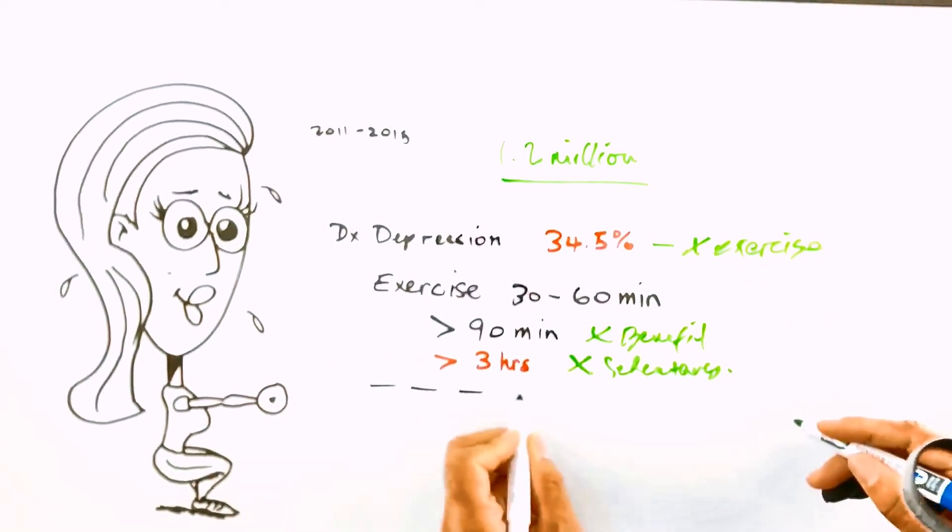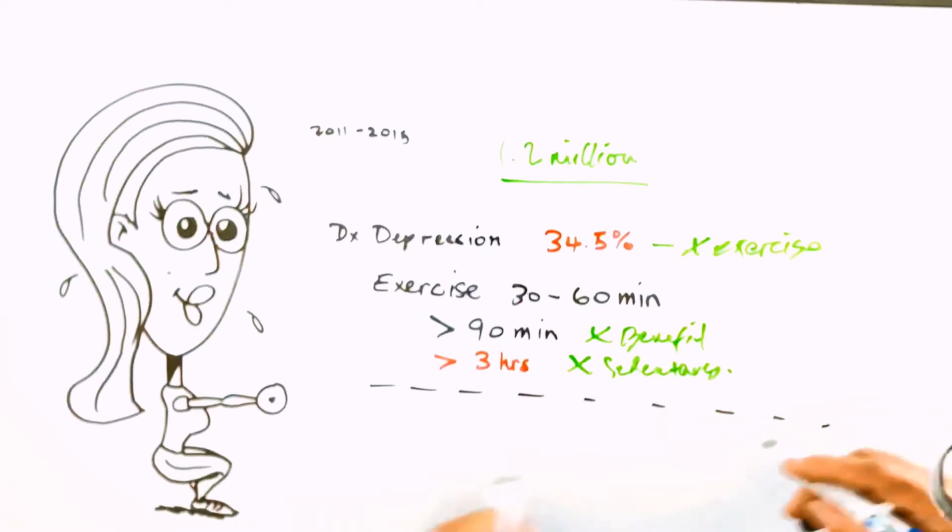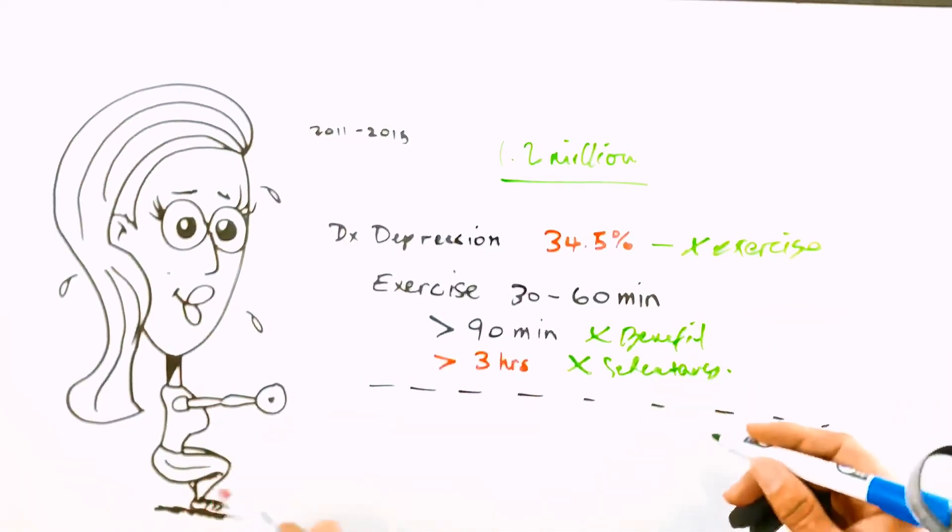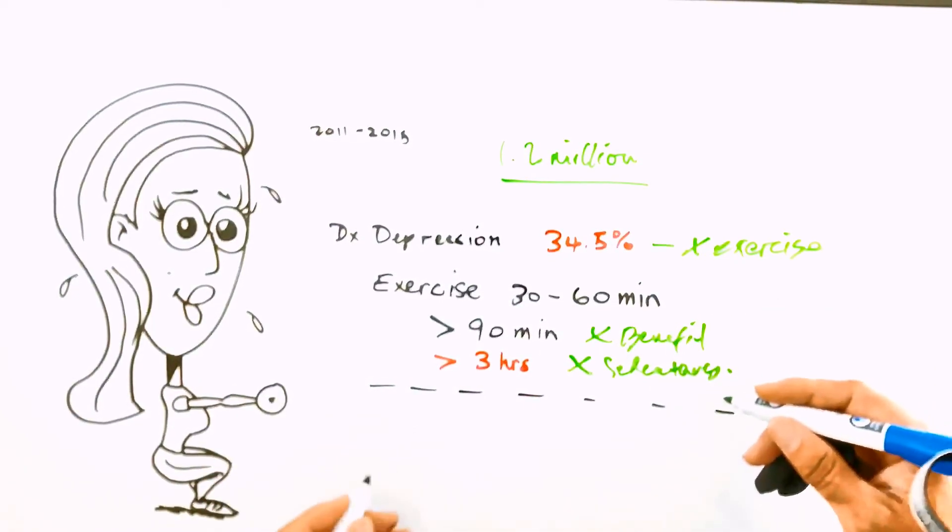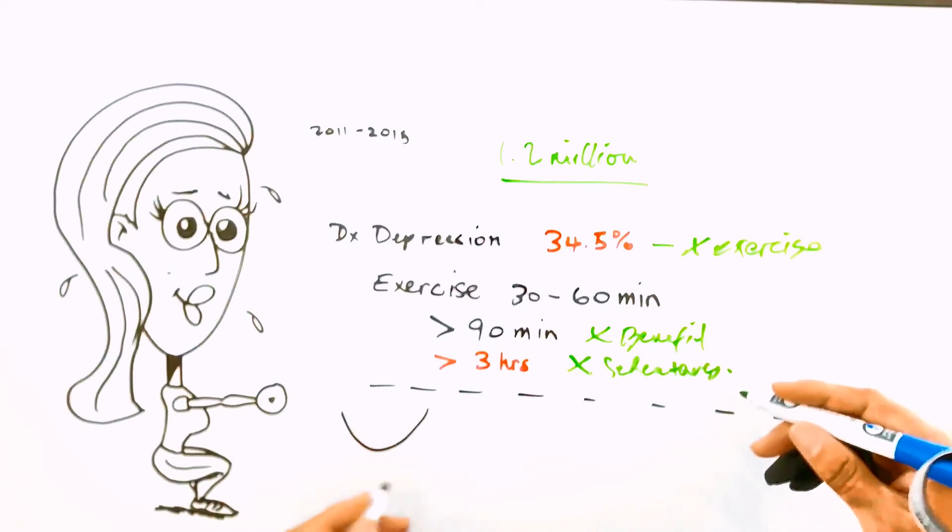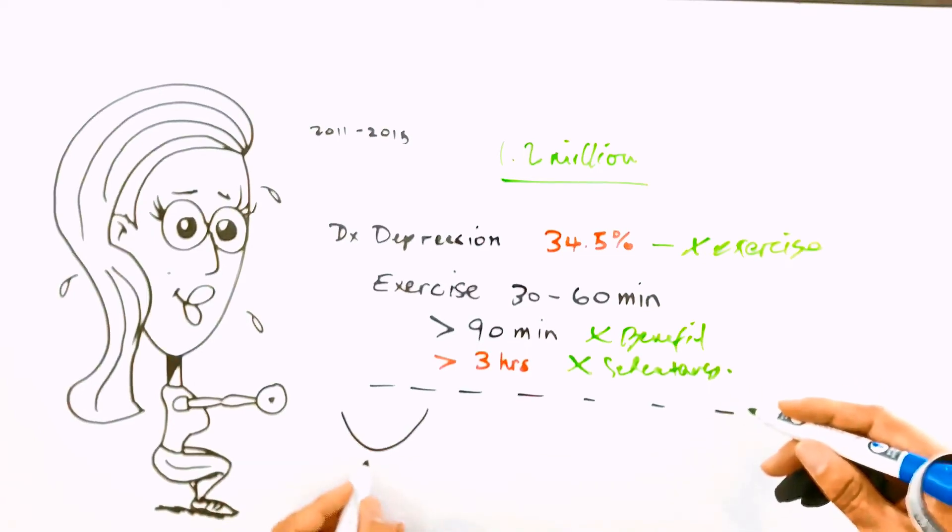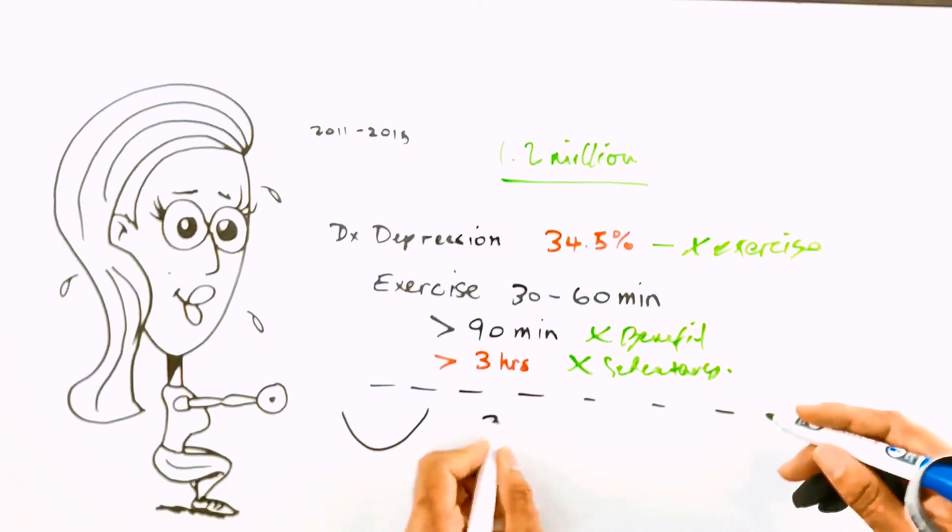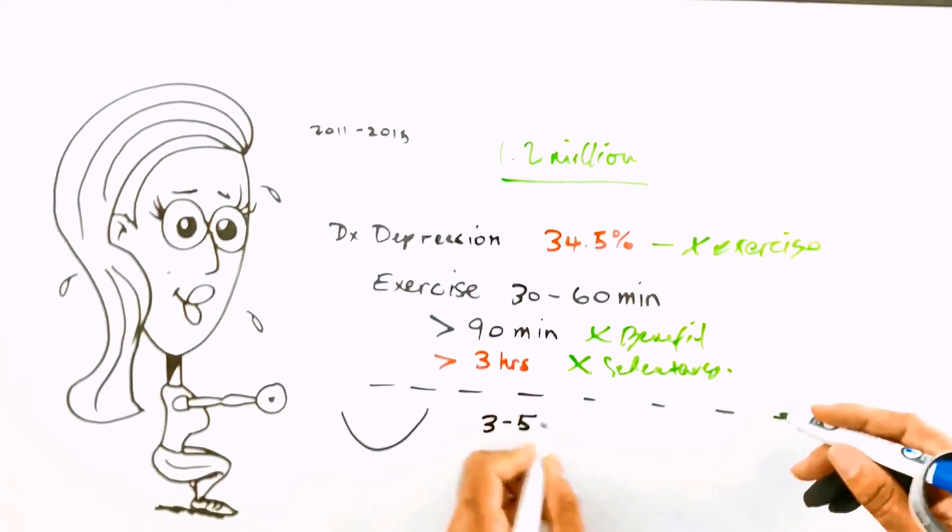The next big question that they were able to answer with this landmark study is how often should you exercise. And what they found, the answer to that was is that the magic number, it followed kind of like a U-shaped distribution. The magic number for exercise was three to five times per week.